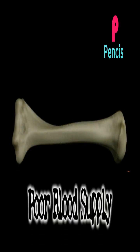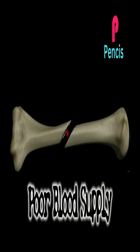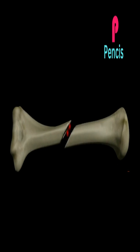Poor blood supply: if the blood supply to the fracture site is poor, there may not be enough of the cells present that carry the tools necessary to build the callus.